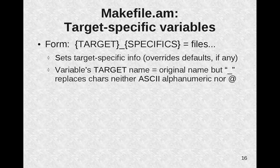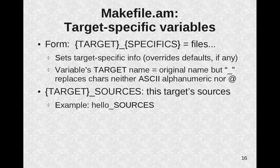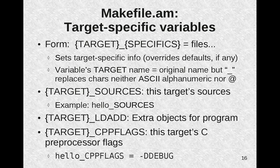You can also set target-specific variables in a makefile.am. These have the form target_SPECIFICS equals files, and they set target-specific information, overwriting defaults if any. The target name of a variable is the same as the original target name, but any characters not ASCII alphanumeric nor an underscore are replaced with an underscore. So target_SOURCES lists the target's source files — you've already seen the example: hello_SOURCES. target_LDADD lists extra objects for the program. target_CPPFLAGS lists this target's C preprocessor flags — for example, hello_CPPFLAGS equals -DDEBUG would give an additional preprocessor flag -DDEBUG to the C preprocessor.